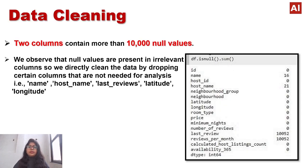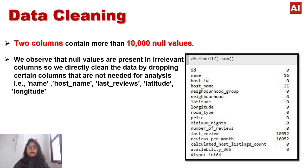Moving to data cleaning, we can see the number of null values in all attributes. ID has zero, name has 16, and so on. Two columns contain more than 10,000 null values: last review and reviews per month. Those two columns may create issues for our analysis or give us useless data. So if we don't need those columns, we drop them; if we need them, we replace the null values by zero. For columns with outliers, we use the quantile method to remove them.